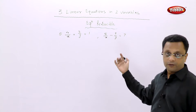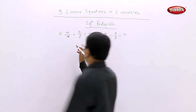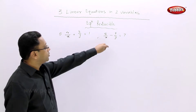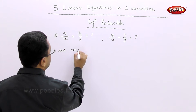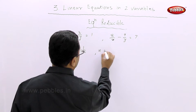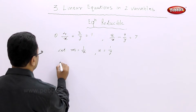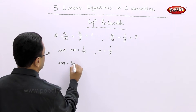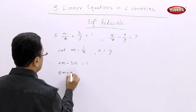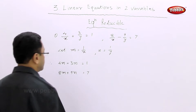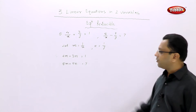Can you see how we can reduce? We have already learned such things in quadratic equations. Here we have 1 upon x and 1 upon y in both equations. So first I will let m equal to 1 upon x and n equal to 1 upon y. Now what equations will we get? We will get 4m plus 3n equal to 1, and the second is 8m minus 9n equal to 7. Now we have got our standard form — a pair of linear equations. We have to just solve this.